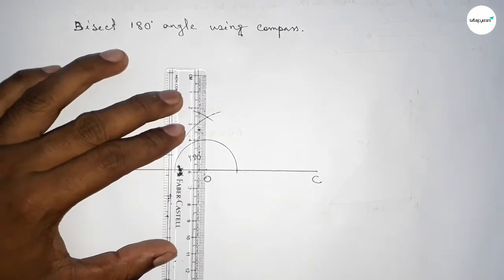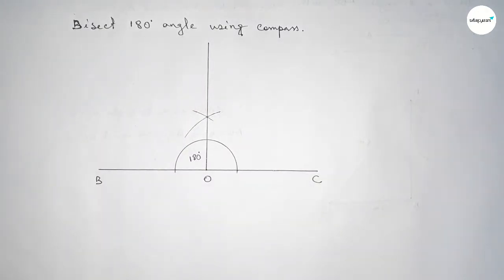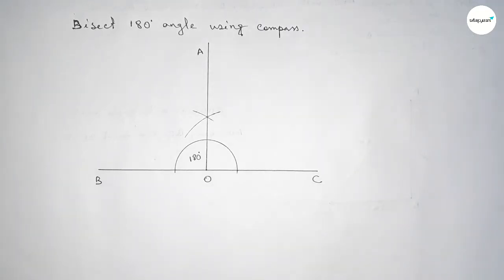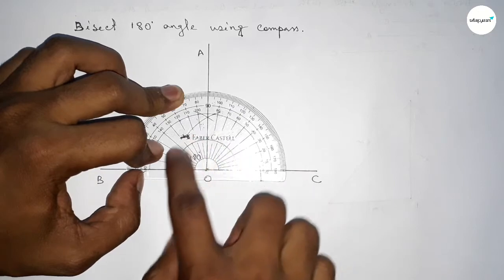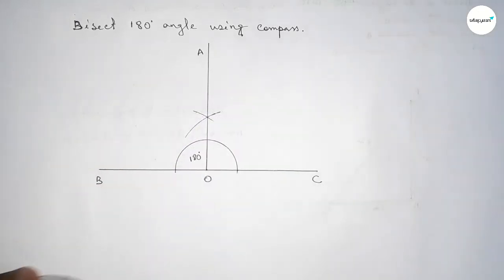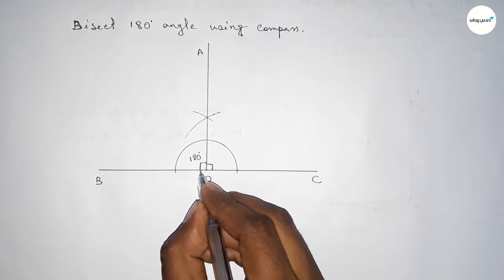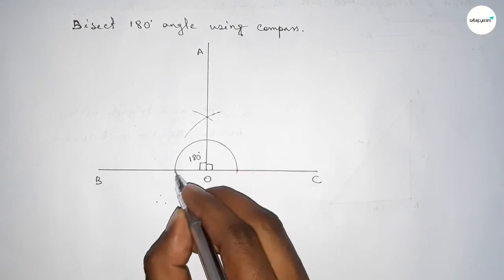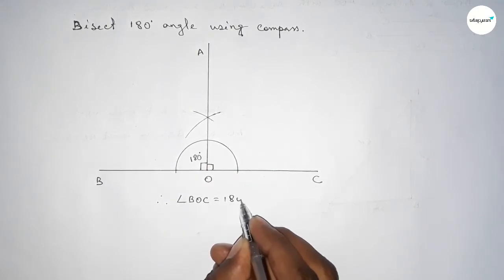Now first joining this and taking here point A. So now checking, this is perfectly 180 degrees and this is 90 degrees and 90 degrees. So this angle and this angle, 90 degrees and 90 degrees. Therefore angle BOC, angle BOC equal to 180 degrees.